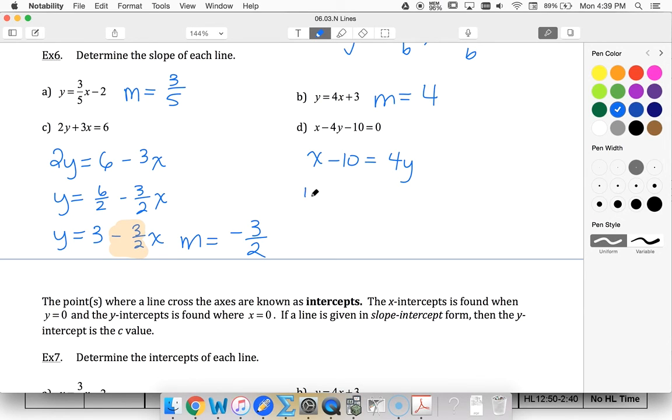Remember, there's an imaginary 1 here. So 1 over 4x minus 10 over 4 is equal to y. That tells me that the slope is 1 fourth. Notice in my slope, no x's, only numbers.